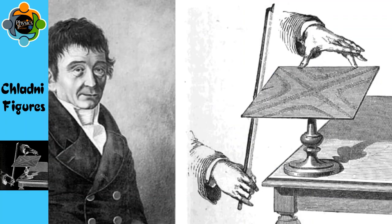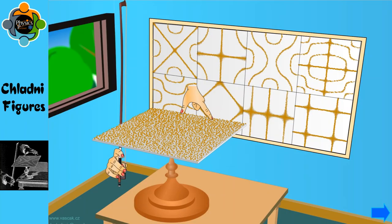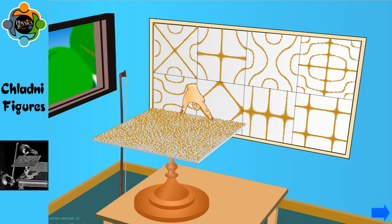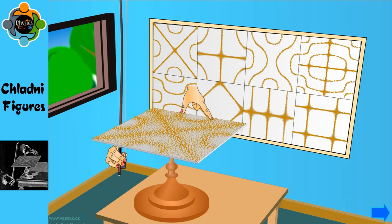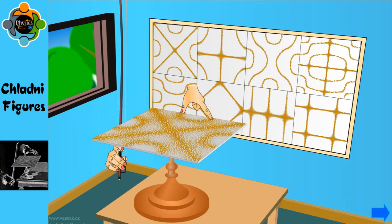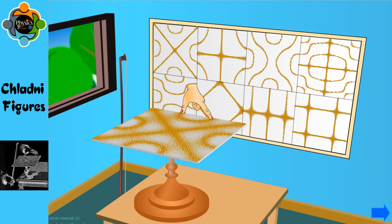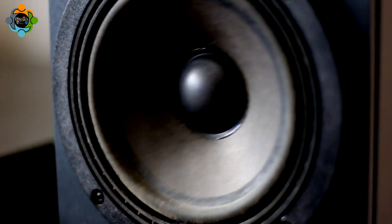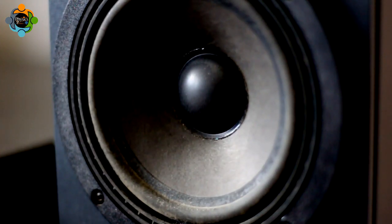To understand Chladni figures better, we need to delve into their history. Ernst Chladni, a German physicist and musician of the 18th century, is credited with their discovery. Chladni not only uncovered the phenomenon but also developed intricate methods to visualize sound vibrations, leading to significant advances in our understanding of acoustics.